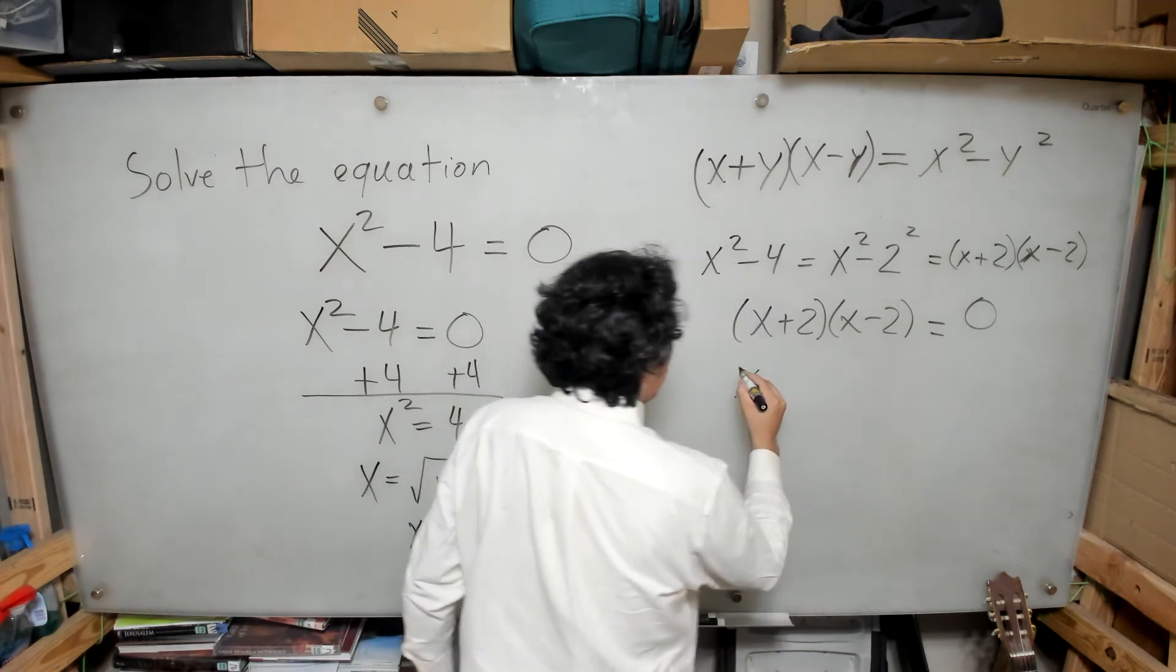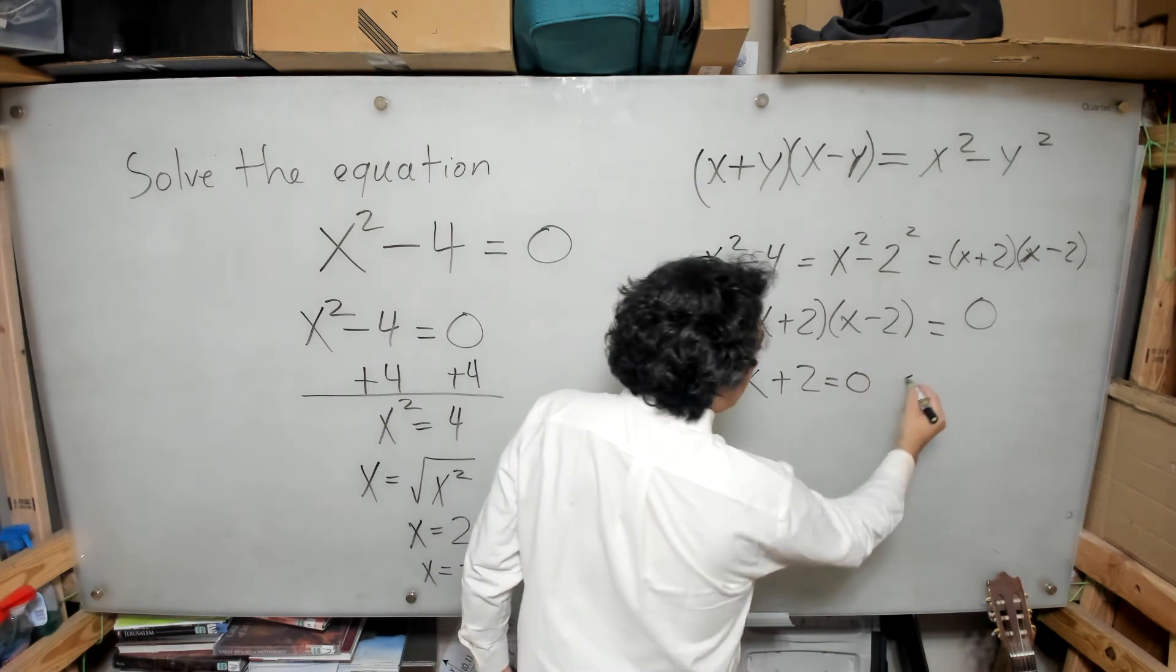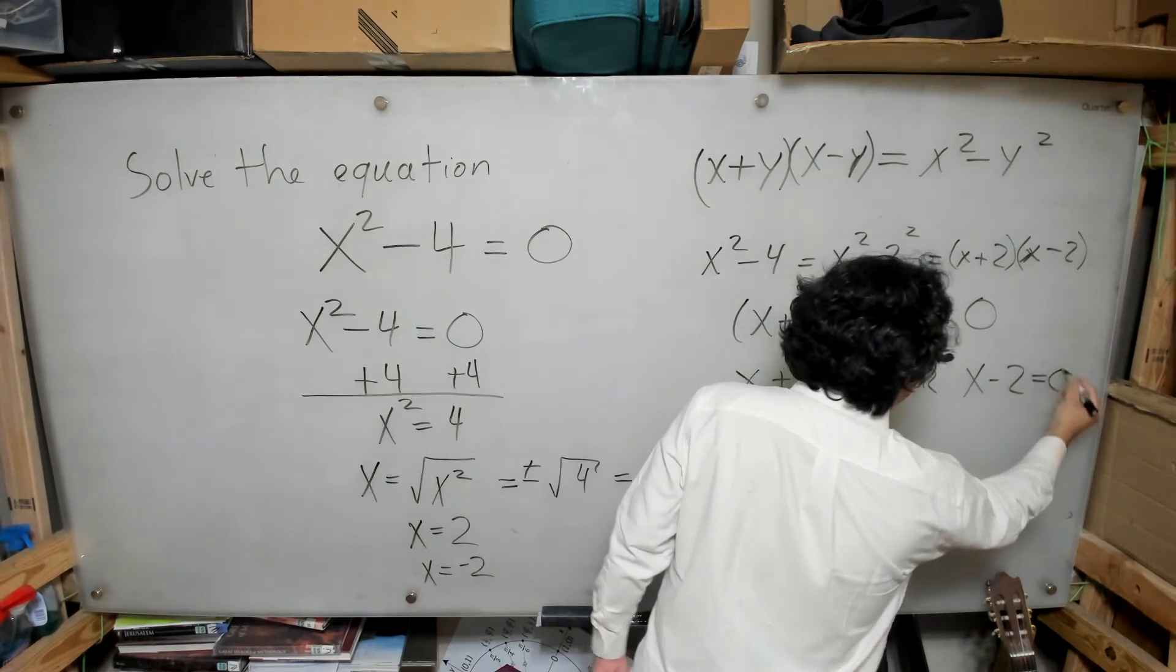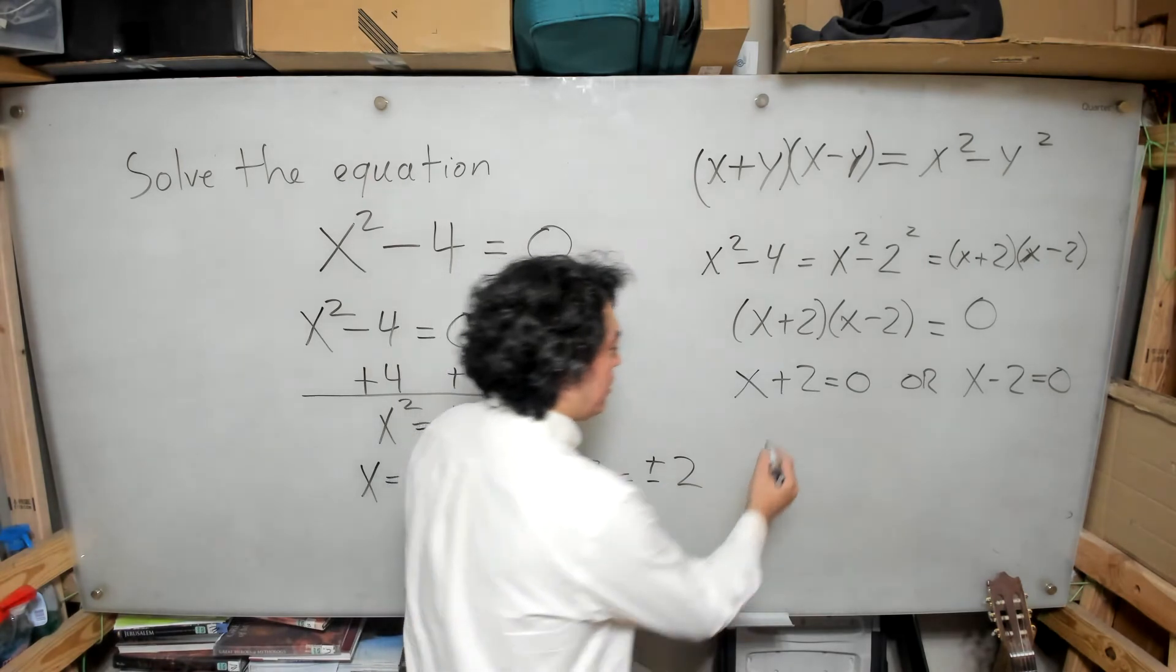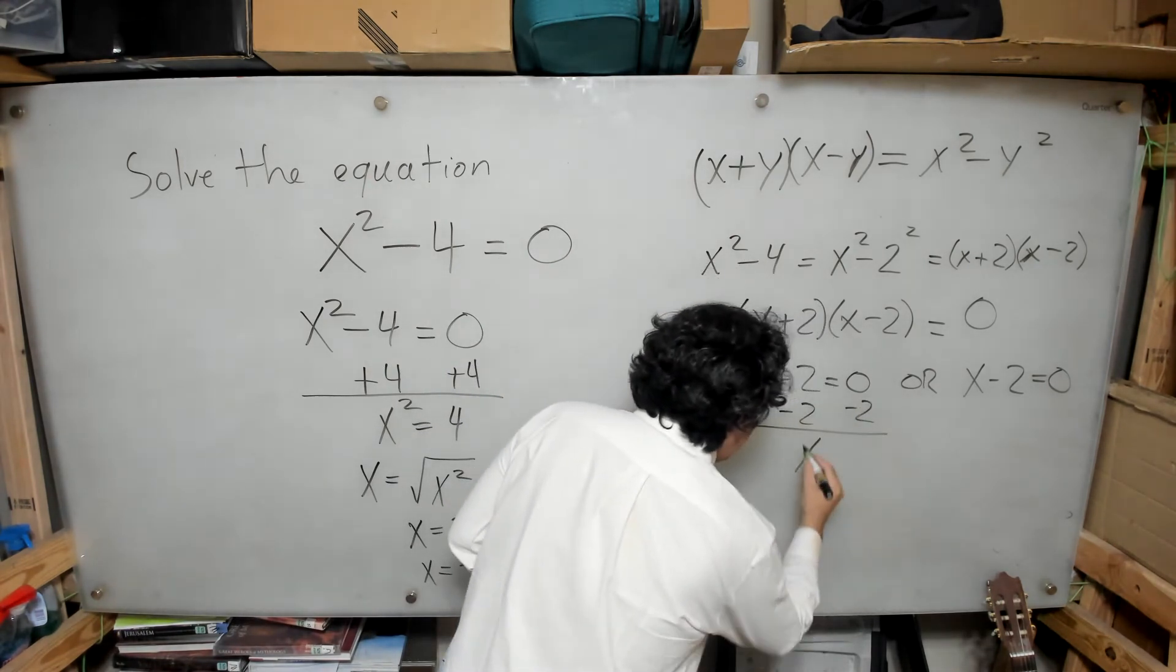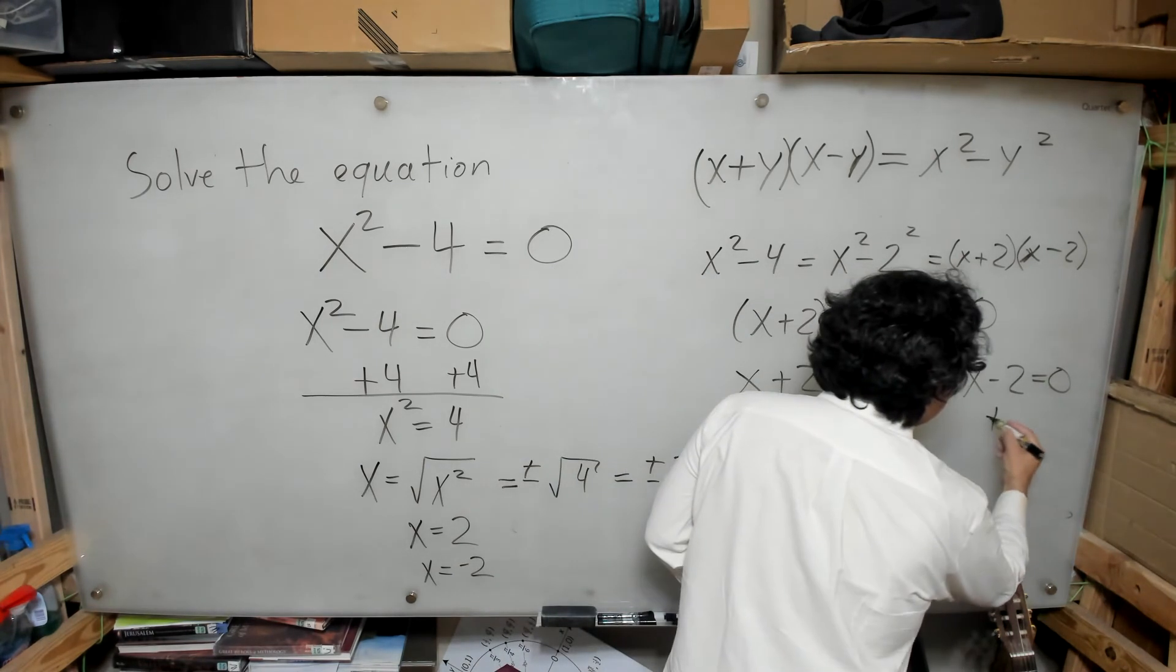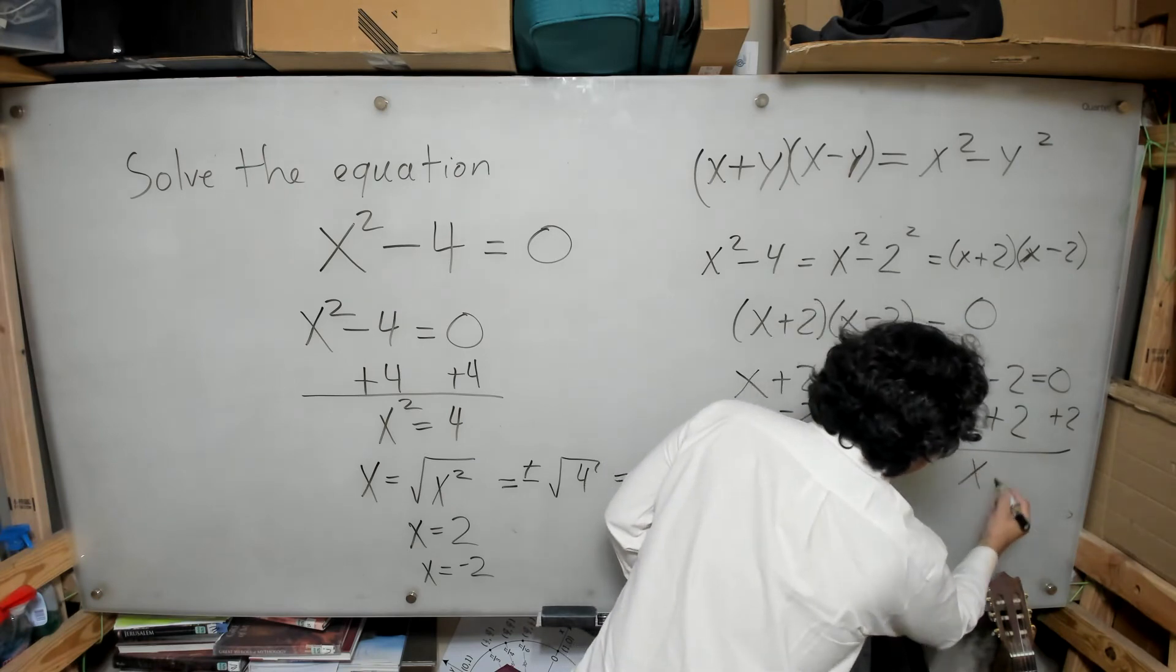So either x plus 2 equals 0 or x minus 2 equals 0. And then here, in this case, I'm going to subtract 2 from both sides. So I get x equals negative 2 or I add 2 to both sides and I get that x is equal to 2.